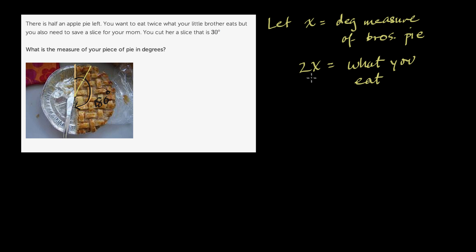So the amount that your brother eats, x, plus the amount you eat, 2x, plus the amount that your mom gets, plus 30 degrees, is going to be equal to this half pie. And remember, all of these are degree measures. So it's going to be equal to 180 degrees.